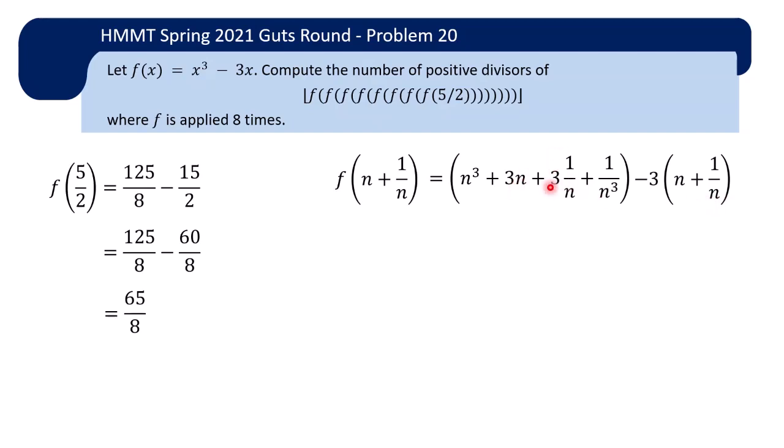Okay, now these middle two terms cancel out and you are left with n cubed plus 1 over n cubed. Aha! So now we realize that if we put in something of the form n plus 1 over n, we get n cubed plus 1 over n cubed. No wonder 2 plus half becomes 8 plus 1 over 8.